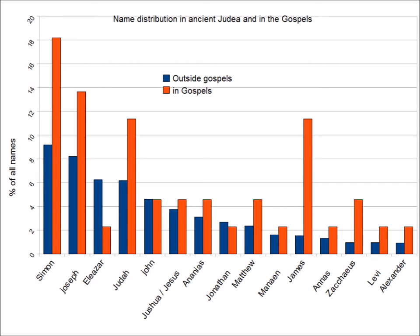Bible historian Richard Bauckham took this and derived a frequency distribution of names to compare with the distribution of names occurring in the Gospels. The match was pretty good. Here is a histogram of the 15 most common names from non-biblical sources in blue. The Gospels, in orange, are a much smaller sample of writing with many fewer names occurring, and therefore a lot more random scatter is to be expected. But nevertheless the match is remarkably good.